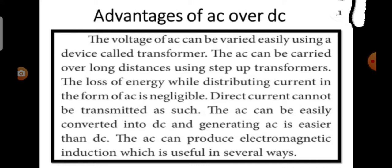The voltage of AC can be varied easily using a device called transformer. The AC can be carried over long distances using step up transformers. The loss of energy while distributing current in the form of AC is negligible. Direct current cannot be transmitted as such. The AC can be easily converted into DC and generating AC is easier than DC. The AC can produce electromagnetic induction which is useful in several ways.